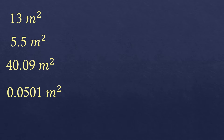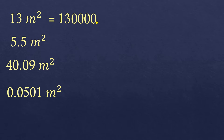Now let's apply what we've learned on converting square meters to square centimeters with four examples. First: 13 square meters converted to square centimeters. Since 13 is a whole number, we place the imaginary decimal point and move it four times to the right — one, two, three, four — filling in empty spaces with zeros. So 13 square meters equals 130,000 square centimeters.